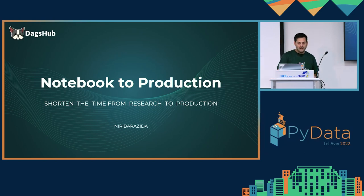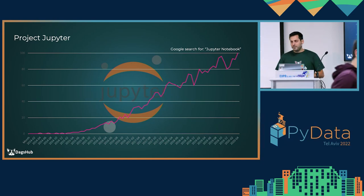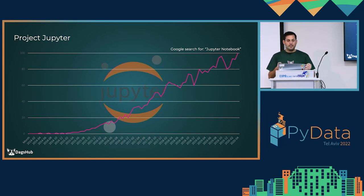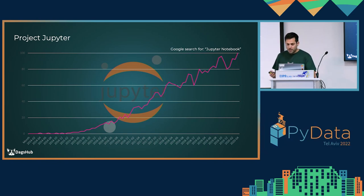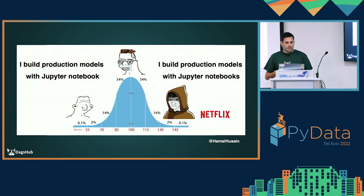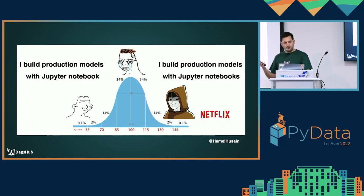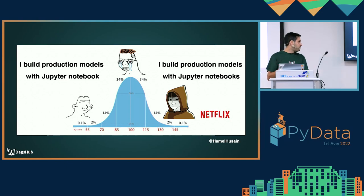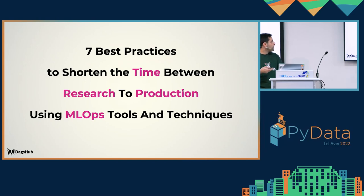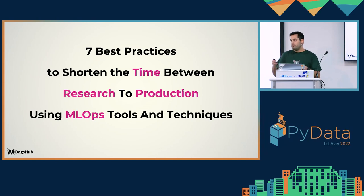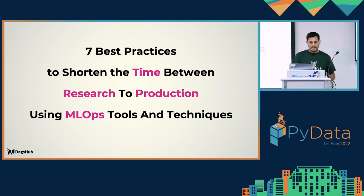Jupyter notebooks grew out of IPython back in 2014 and have become the de facto standard tool for data scientists to build their projects. To give you a sense of its impact, Jupyter notebooks was awarded the 2017 ACM award — a prestigious award shared with Java, Unix, and the web. However, using notebooks to build a model project and application for production has introduced challenges we have never encountered before. Today we're going to discuss seven best practices that will help us shorten the time between research and moving to production, using MLOps tools and techniques.